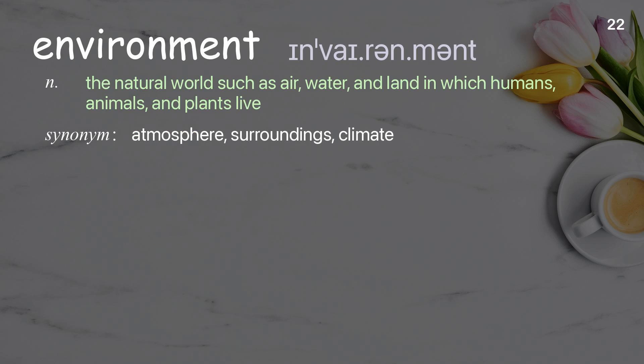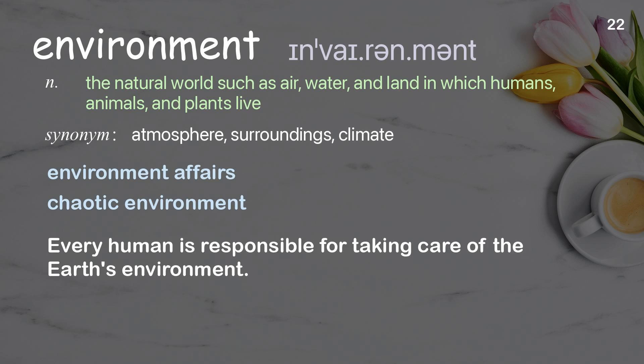Environment. The air, water, and land in which humans, animals, and plants live. Examples: environment affairs; chaotic environment. Every human is responsible for taking care of the Earth's environment.